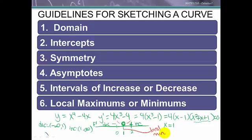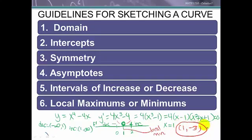Since the function is decreasing and then increasing at x = 1, we know there is a local minimum at x = 1. Substituting x = 1 into the original function gives 1 - 4 = -3, so the local minimum is at the point (1, -3).